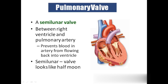The pulmonary valve is present at the entry of the pulmonary artery. These valves look like a half-moon shape — that's why they are named semilunar valves. This also prevents the backward flow of blood from the pulmonary artery to the right ventricle.